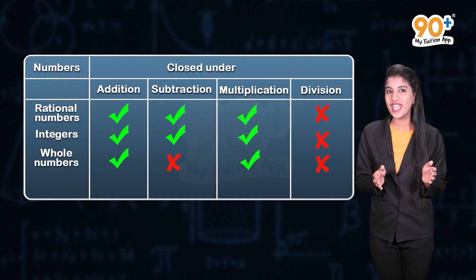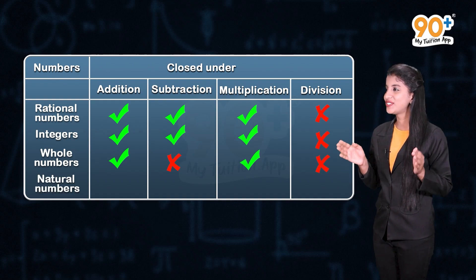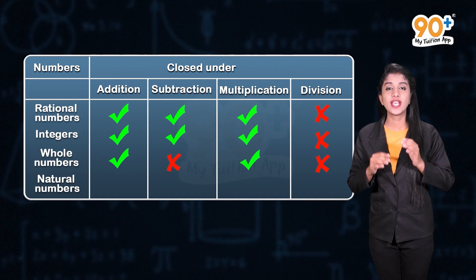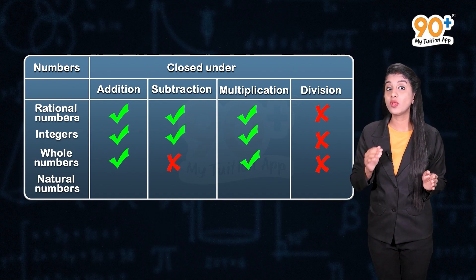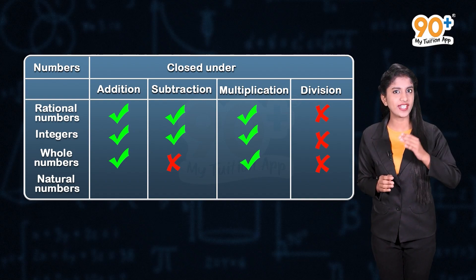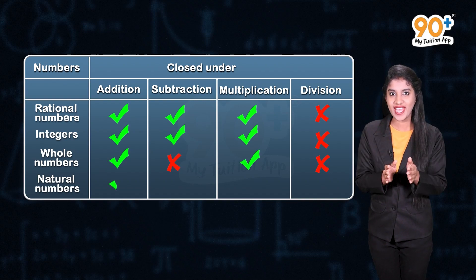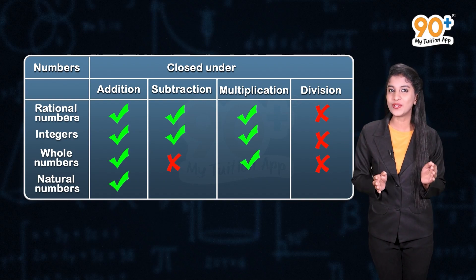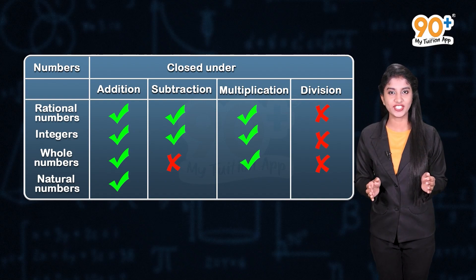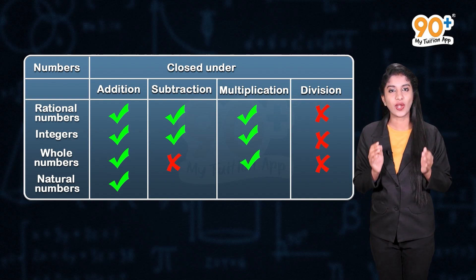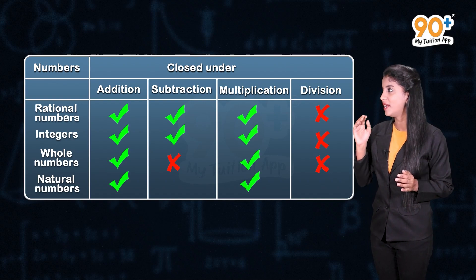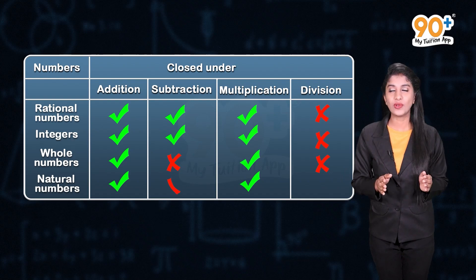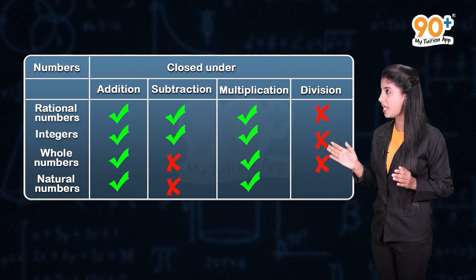For natural numbers: natural numbers are closed under addition and multiplication, but not closed under subtraction and division.